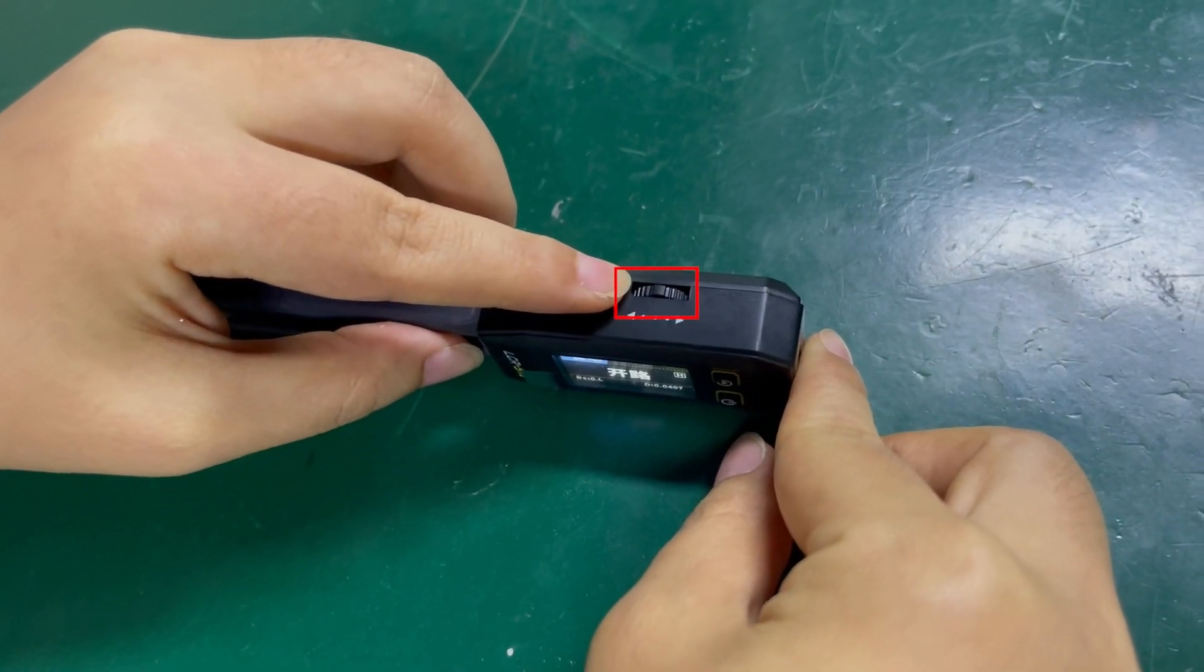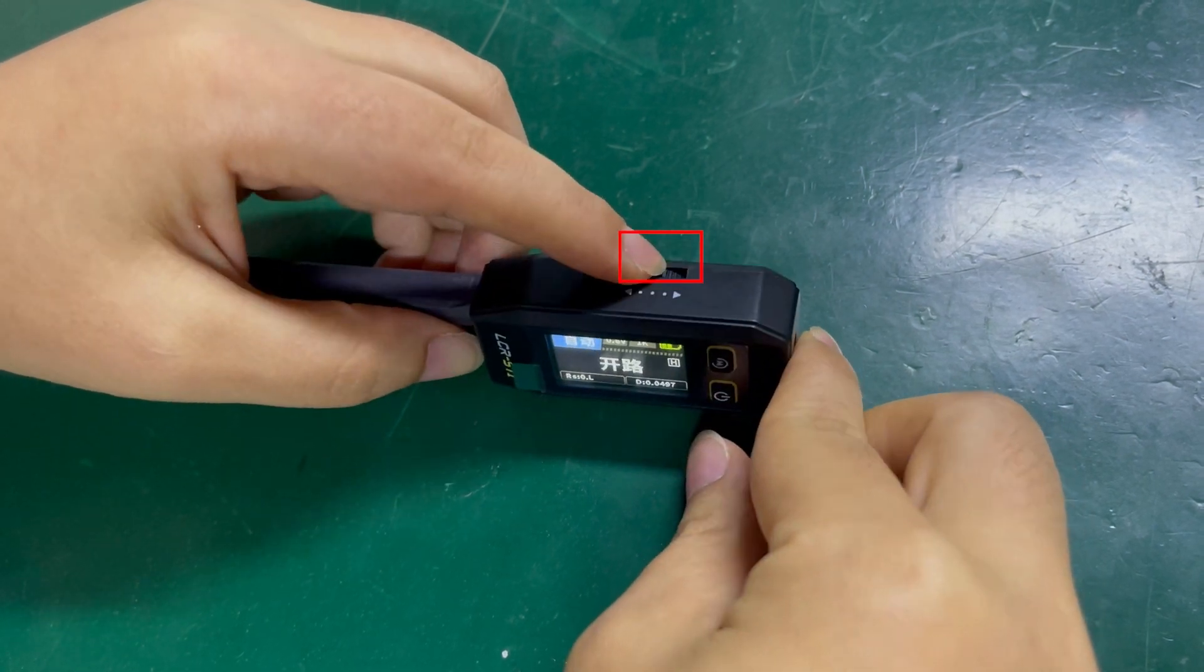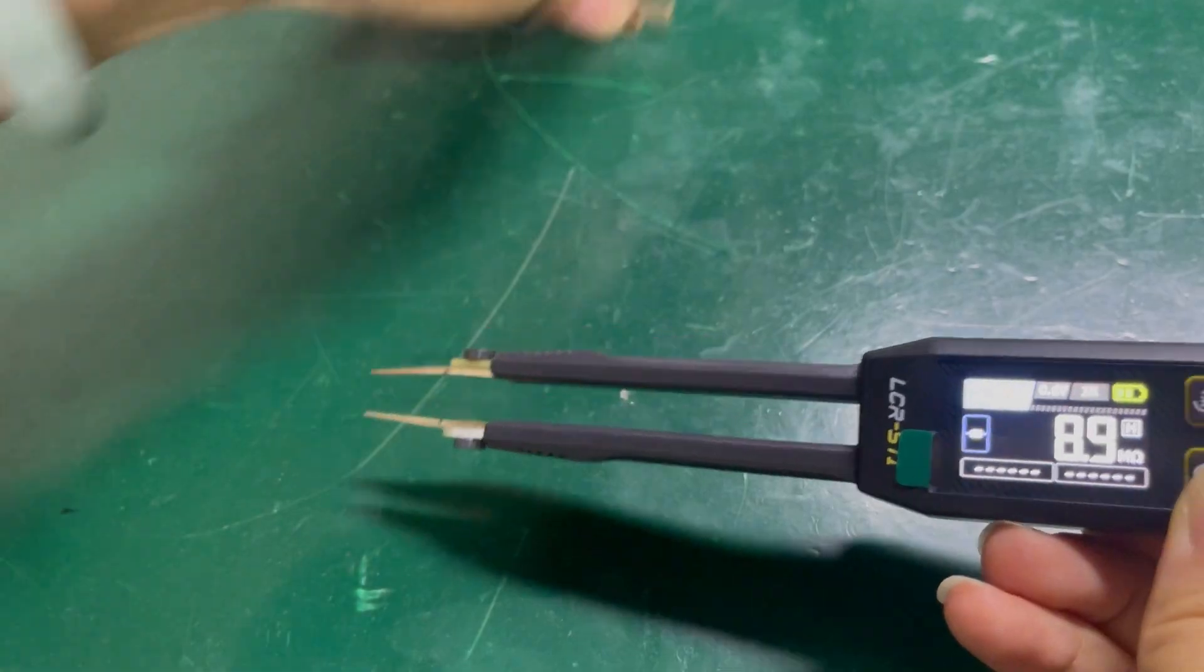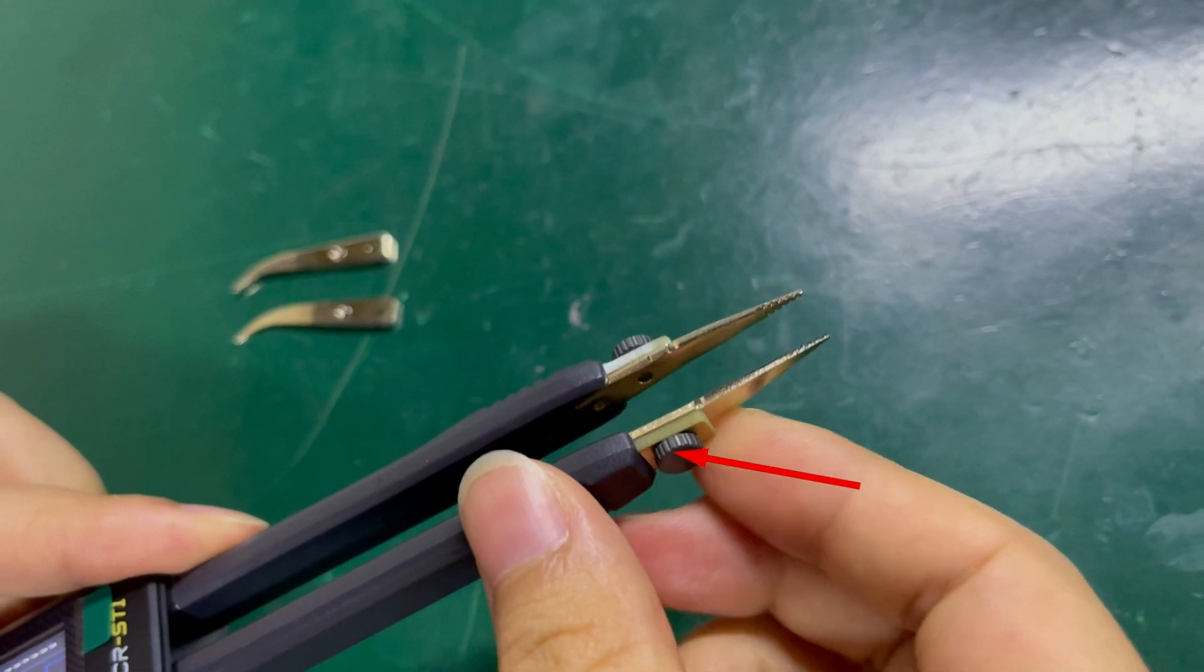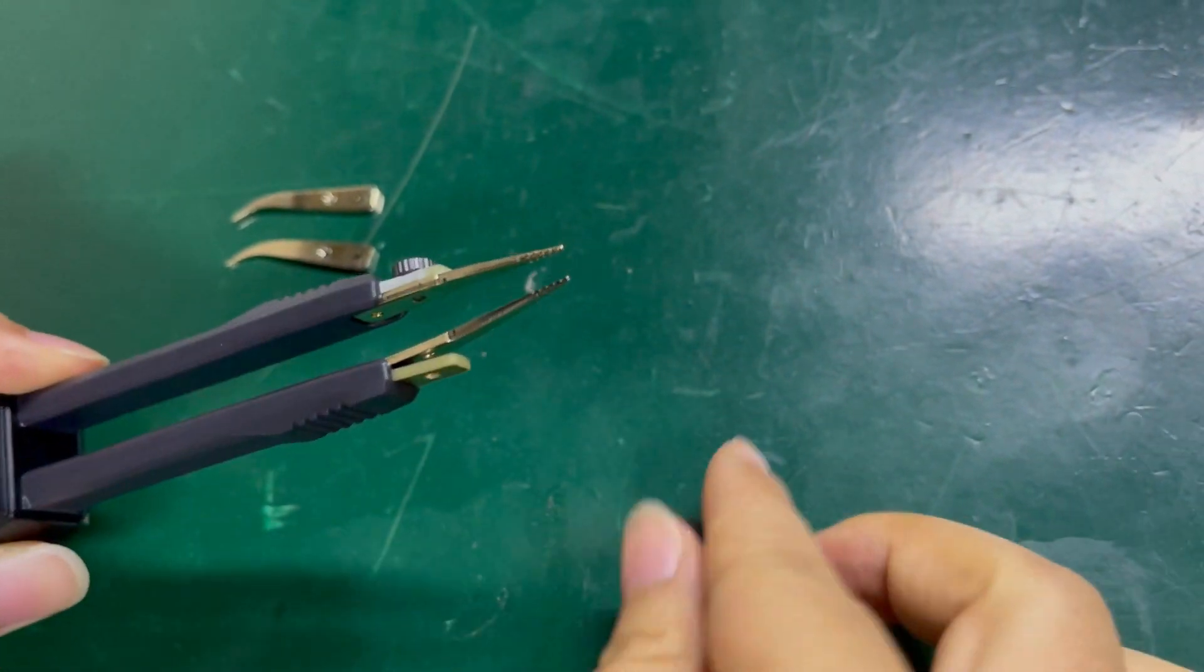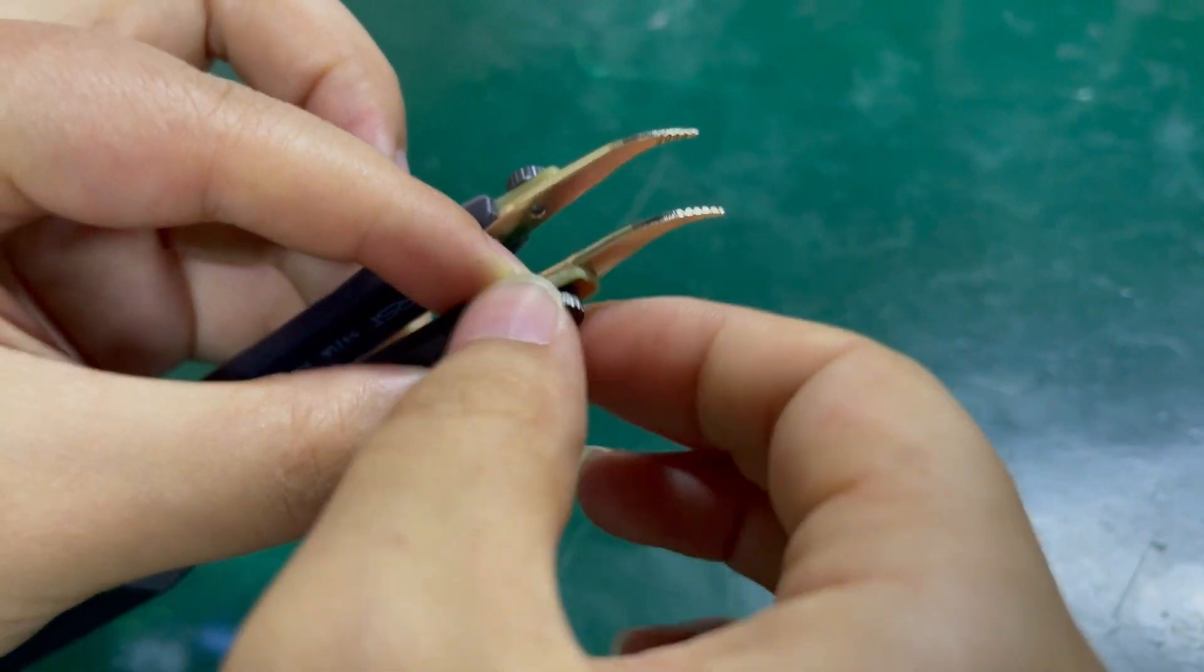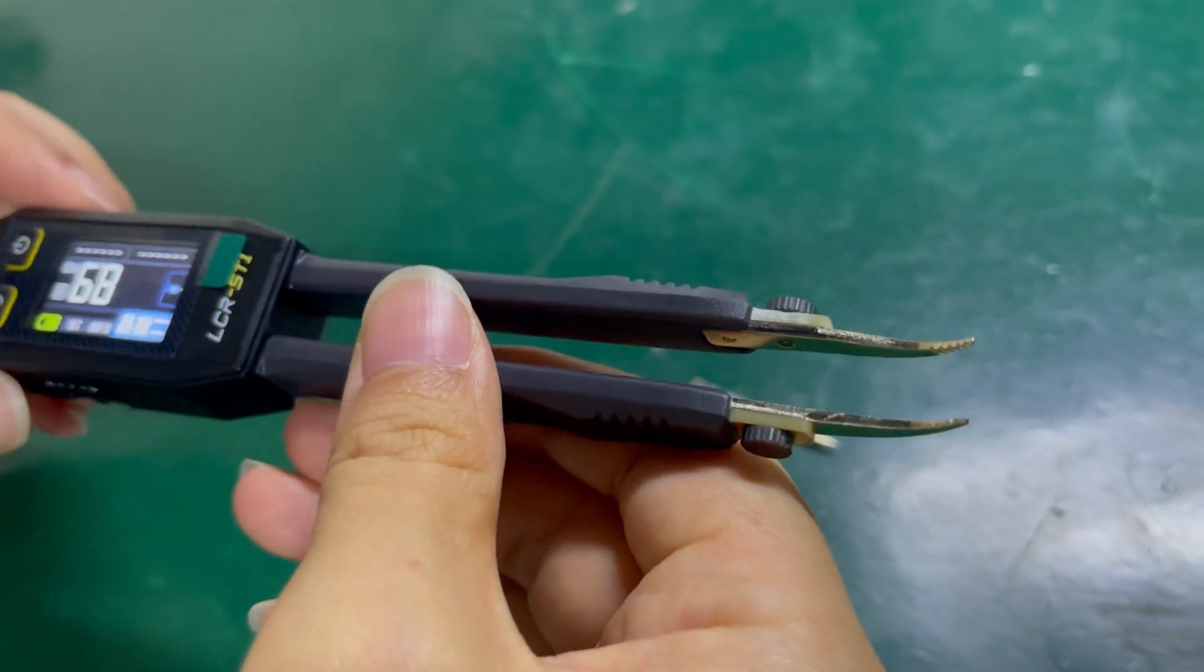This dial button here can be swiped left or right to select the components to be tested. Here are the test probes, and another pair of replaceable hooked clips. Unscrew the screw here, and we can replace them. Easy peasy, switch them up to your preference.